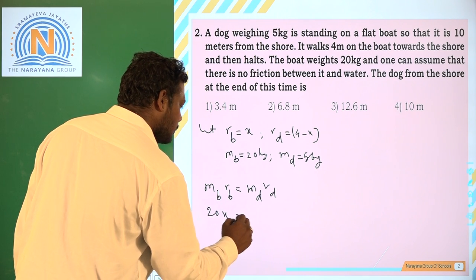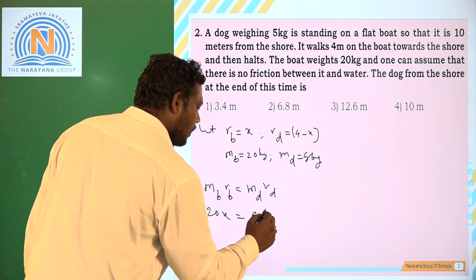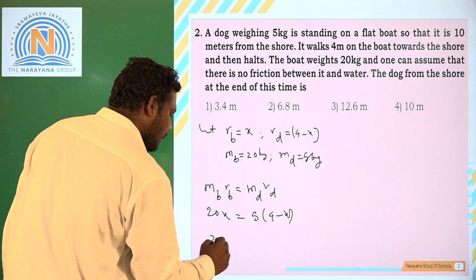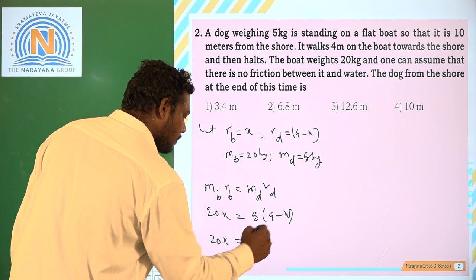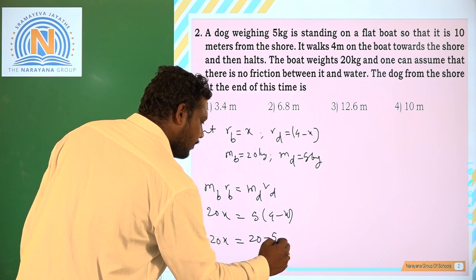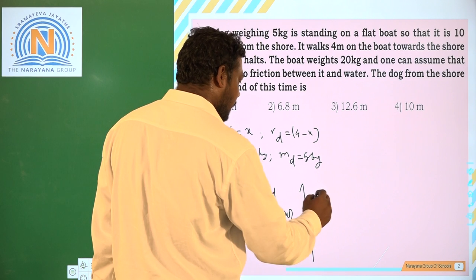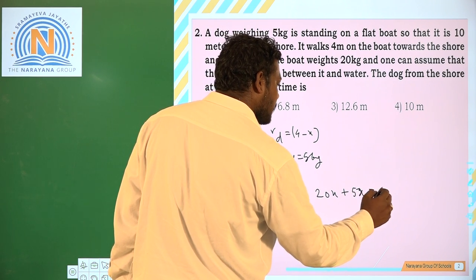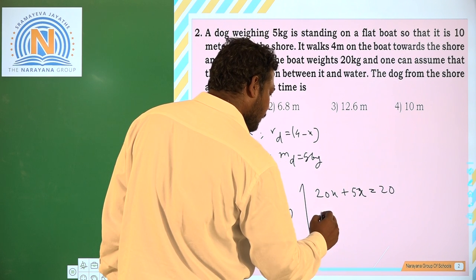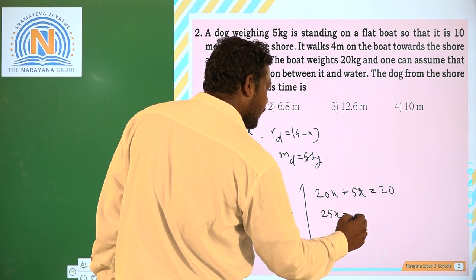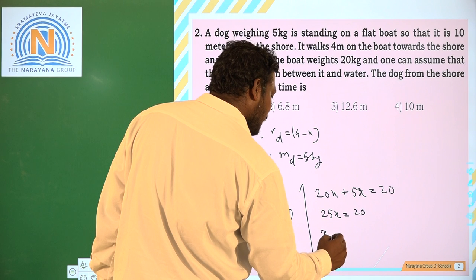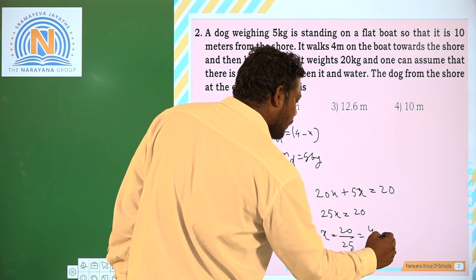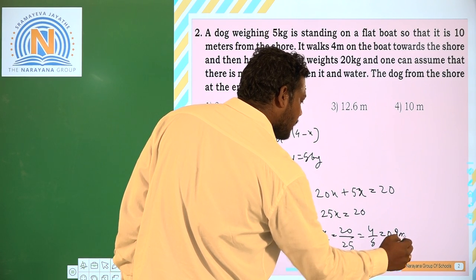This 20 into x should equal 5 into 4 - x. 20x = 20 - 5x. 20x + 5x = 20. 25x = 20. x = 20/25 = 4/5 = 0.8 meters.